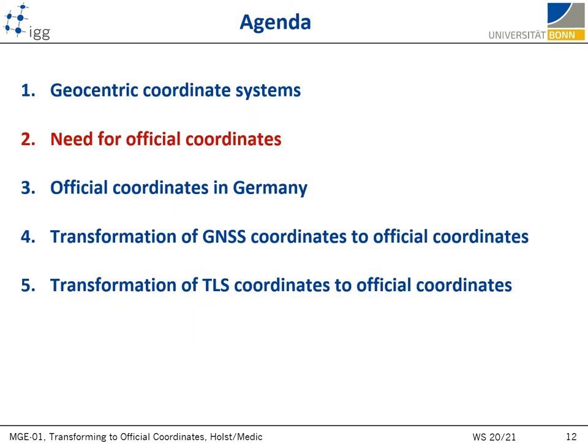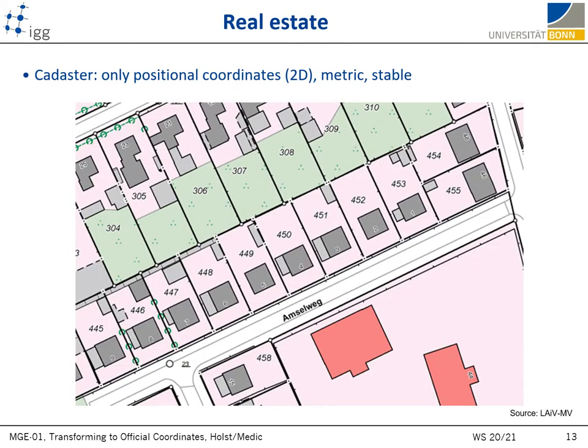Now I will quickly present a few reasons why for many applications such coordinates are not sufficient and why we need official coordinates related to cartographic projection, split from 3D into 2D plus 1D. Many applications require that the positions of objects are defined on the Earth's surface in easily interpretable and measurable metric units. This is fulfilled neither with 3D global Cartesian coordinates, which are metric but have no connection to the Earth's surface, nor with ellipsoidal coordinates that are given in angular values, which are highly impractical to work with on a smaller scale.